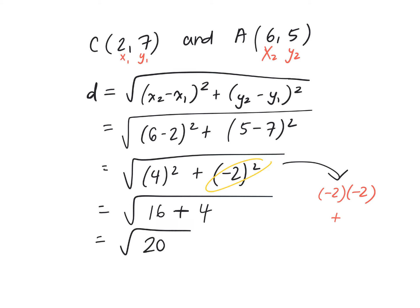16 plus 4 is 20. Square root of 20, approximately, let's round it to the nearest tenth, 4.5 units. So the shortest distance between that point and the line is approximately 4.5 units.